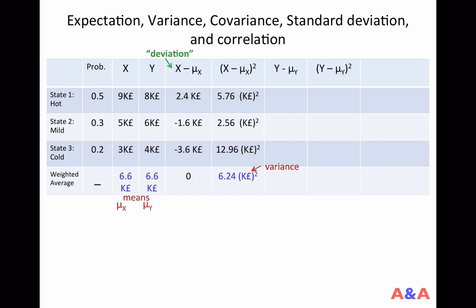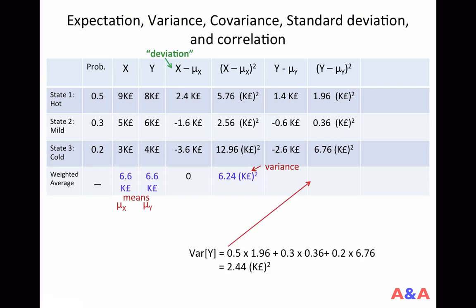The same thing can be done for random variable y. You compute the deviations, square them, and take the weighted average of the squared deviations. That gives the variance of y, denoted Var(y), equal to 2.44 million pounds squared. You can see the variance is much larger for x, and in this sense variance captures the variability or risk of a random variable.